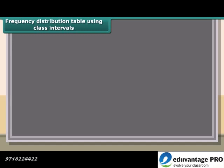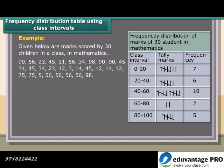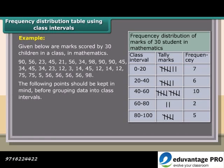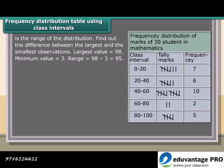Frequency Distribution Table Using Class Intervals: Example - Given below are marks scored by 30 children in a class in mathematics. The following points should be kept in mind before grouping data into class intervals. When you group data into class intervals, the most important factor that you have to take into consideration is the range of the distribution. Find out the difference between the largest and the smallest observations. Largest value is equal to 98. Minimum value is 3. Range is 98 minus 3, which equals 95.